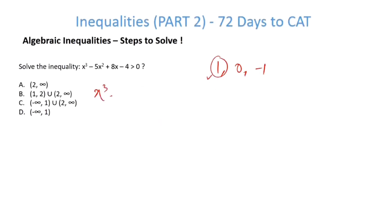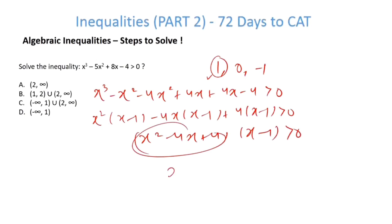Factorize it same. x cube minus x square minus 4x square plus 4x plus 4x minus 4 greater than 0. We know that x square I will take common. This becomes x minus 1 minus 4x x minus 1 plus 4x minus 1 greater than 0. This becomes x square minus 4x plus 4 into x minus 1 is greater than 0. This is nothing but x minus 2 whole square into x minus 1 greater than 0.